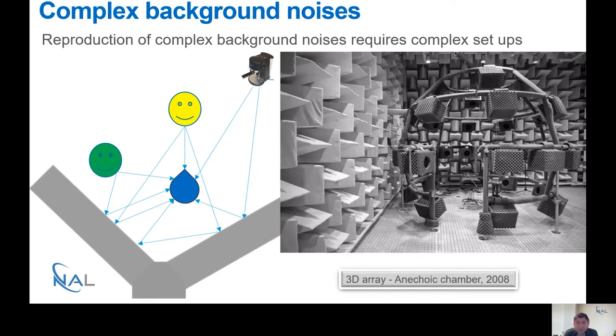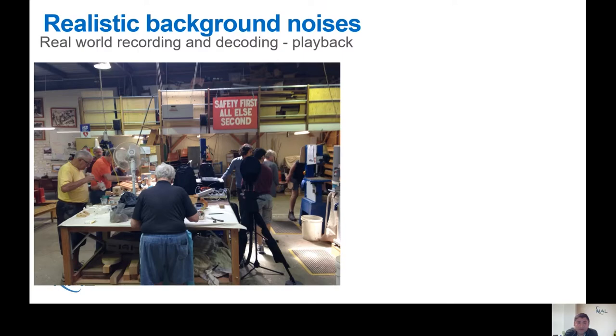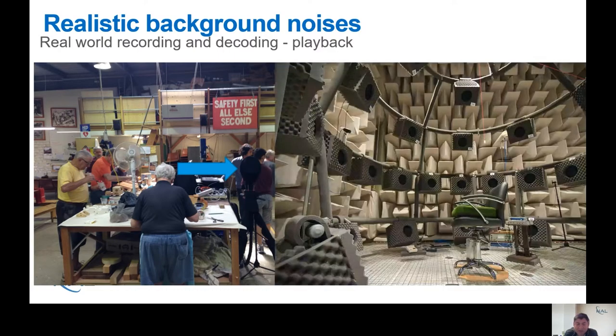To do so, we require very complex acoustic setups. For example, the spherical loudspeaker array we use at the National Acoustic Laboratories. Once we have a setup like this, how do we go about selecting the type of material we want to play back in these conditions? One way to select material is to go into the real world and record it. Once we record these environments, we can play them back into the spherical loudspeaker array back in the lab.